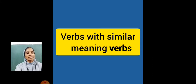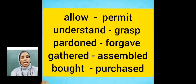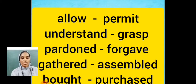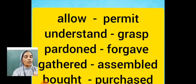Now we can see the words with similar meaning verbs. First one: allow. Allow means to permit. Both these words allow and permit have got the same meaning. Next: understand. What is the similar meaning verb here? Grasp. Both these words grasp and understand have got the same meaning — means to realize, to know.